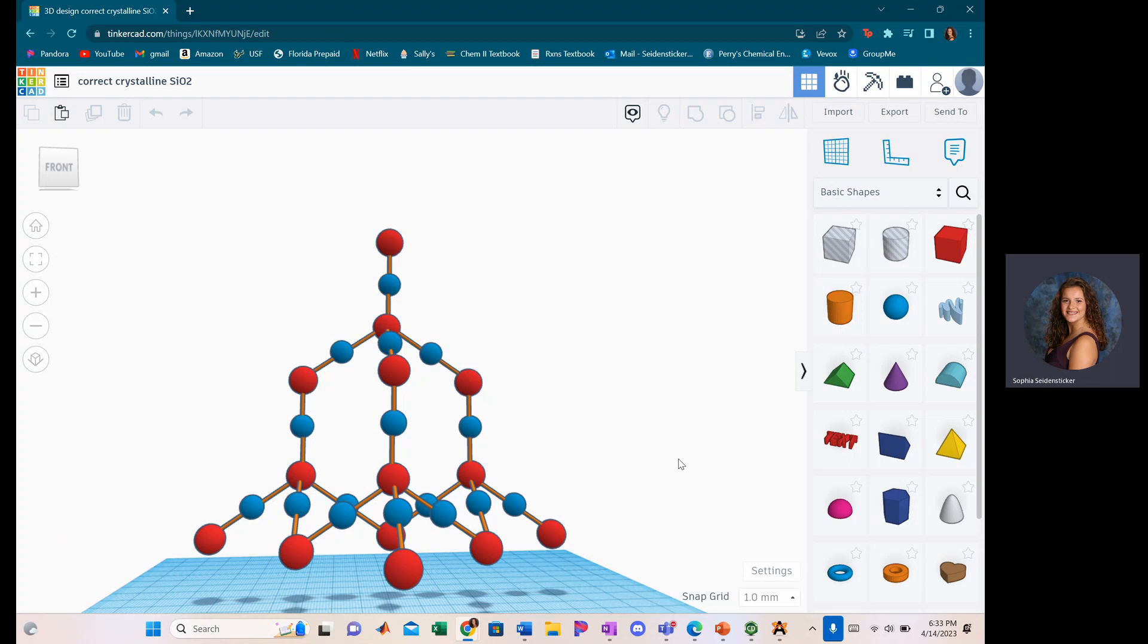Siliceous sand is melted and rapidly cooled, forming amorphous silicon dioxide, which is glass.